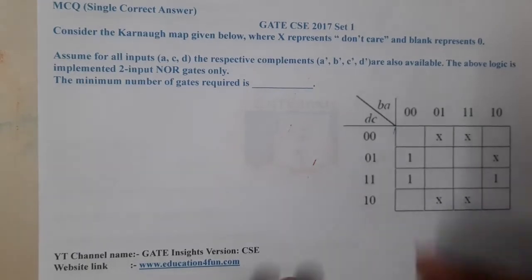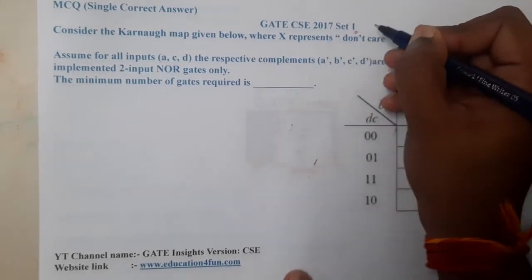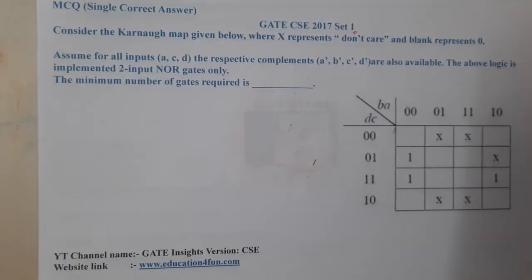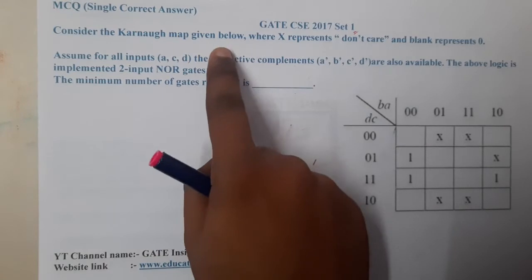Hello guys, we are back with the next lecture. In this lecture, let us go through the next question. This question belongs to GATE CSE 2017 Set 1. The question is: consider the Karnaugh map